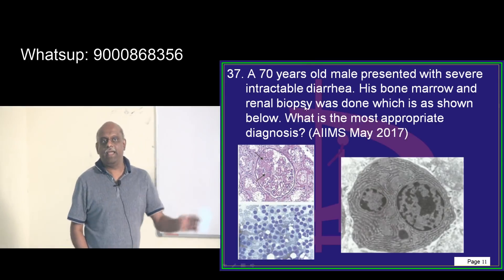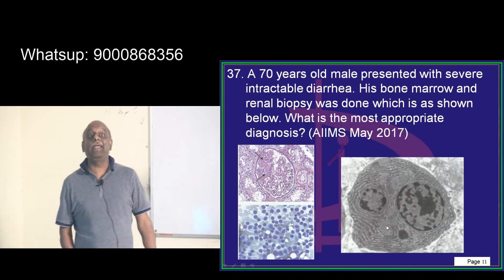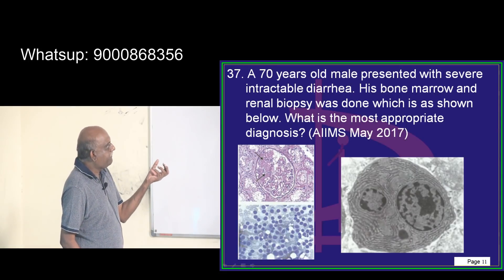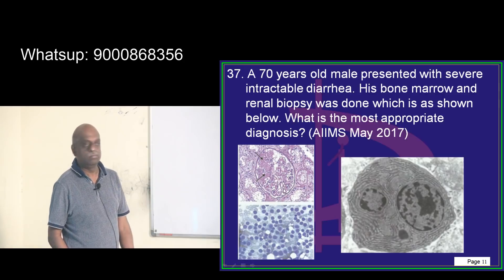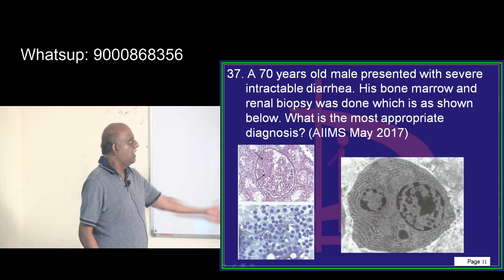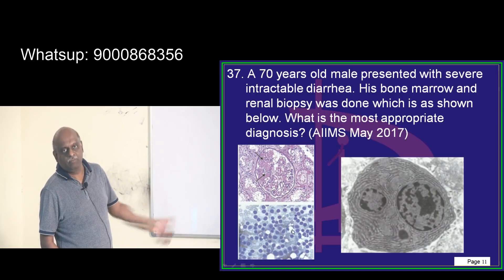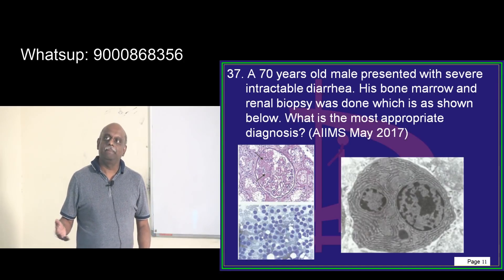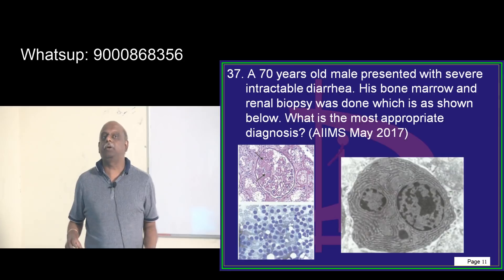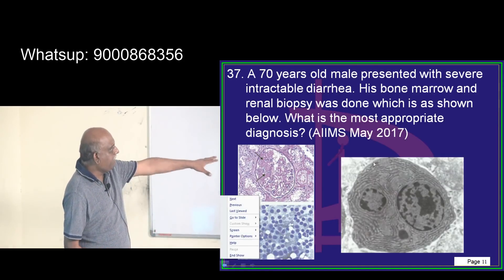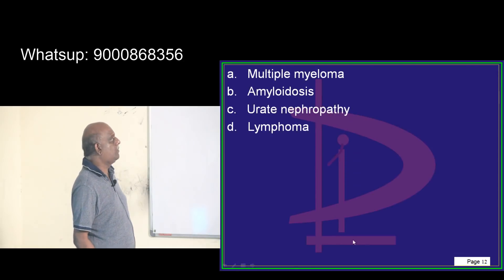A 70-year-old male with intractable diarrhea — his bone marrow and renal biopsy have been shown. You can see a lot of material being deposited, and the bone marrow shows a lot of plasma cells. Increased plasma cell density in bone marrow is an indication of multiple myeloma. When plasma cell population is more than 30% of the total bone marrow cellular population, that defines multiple myeloma. You are also finding the presence of myeloma kidney, which has deposition of congophilic material.